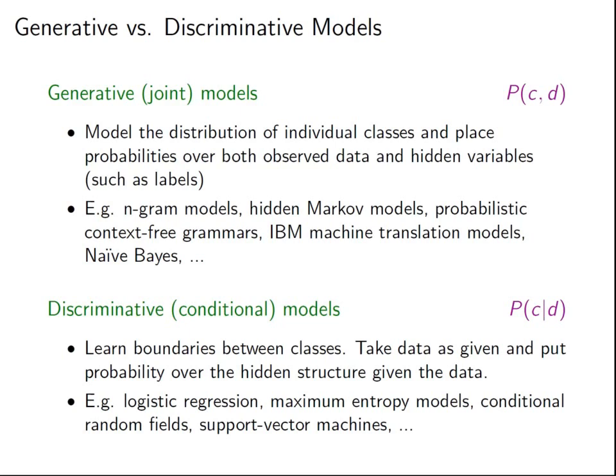Before getting into actual models, there's the distinction between generative and discriminative approaches. A generative or joint model tries to model the probability of C and D together — the joint probability of classes and documents, or observed data together with hidden variables where the class labels are the hidden variables. Examples include n-gram models, hidden Markov models, probabilistic CFGs, and the IBM machine translation models. All of those fall into this category of generative models.